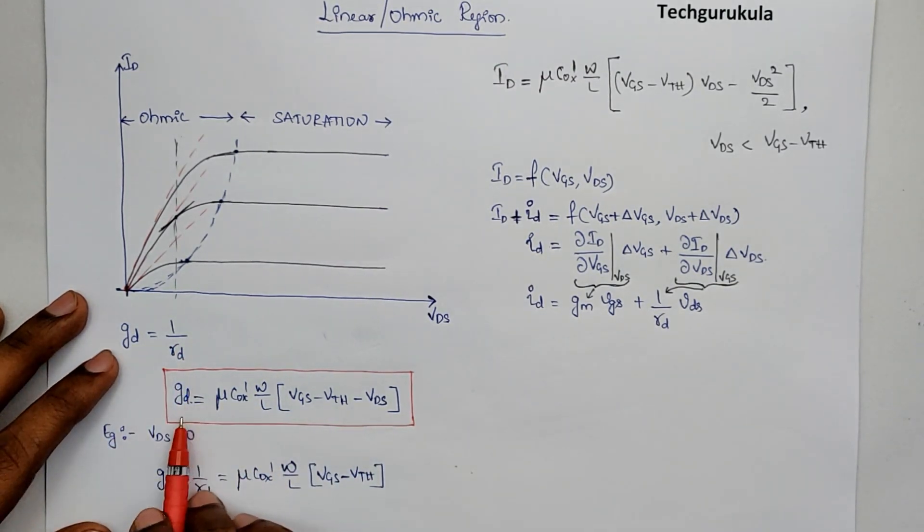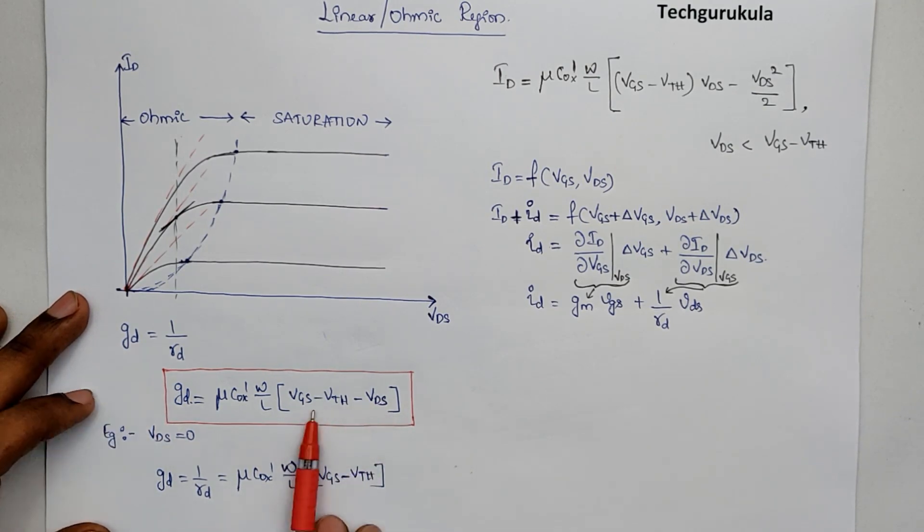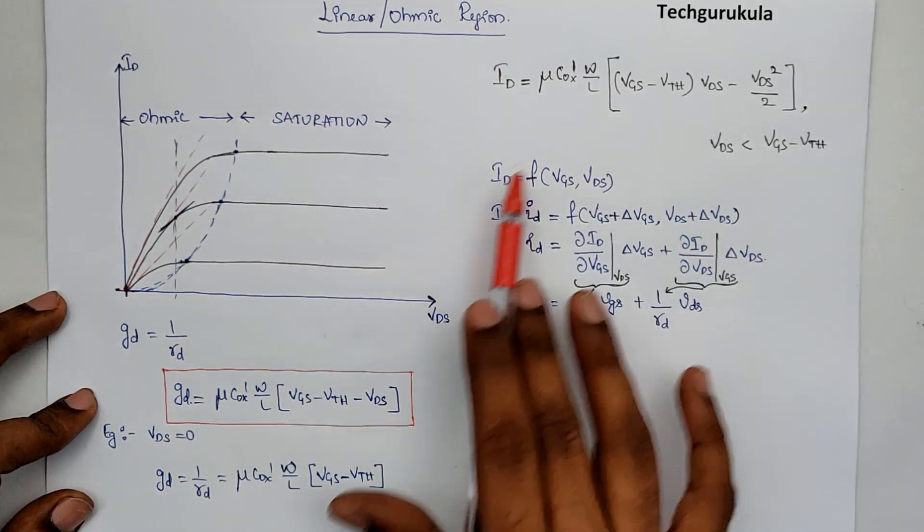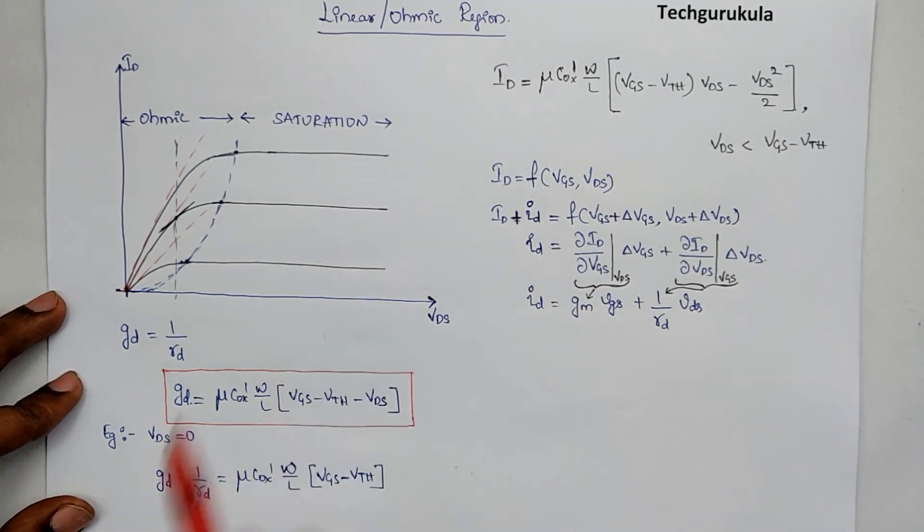In fact, small signal values. And of course, small signal values would depend on the DC values, which means the biasing point. In fact, the small signal model is discussed in a bit detail in the saturation region of operation of MOSFET.